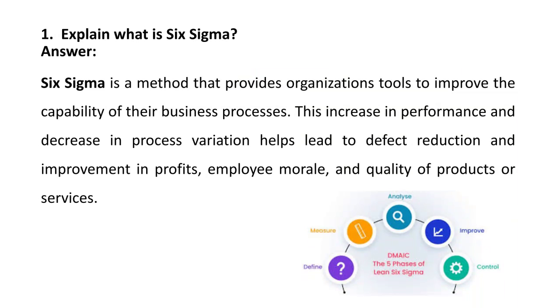There are five phases in Six Sigma, also known as DMAIC, where D means Define, M means Measure, A means Analyze, I means Improve, and C means Control.